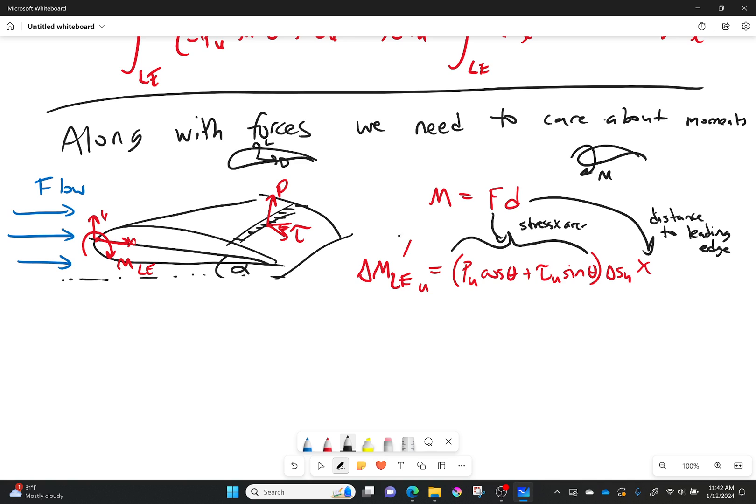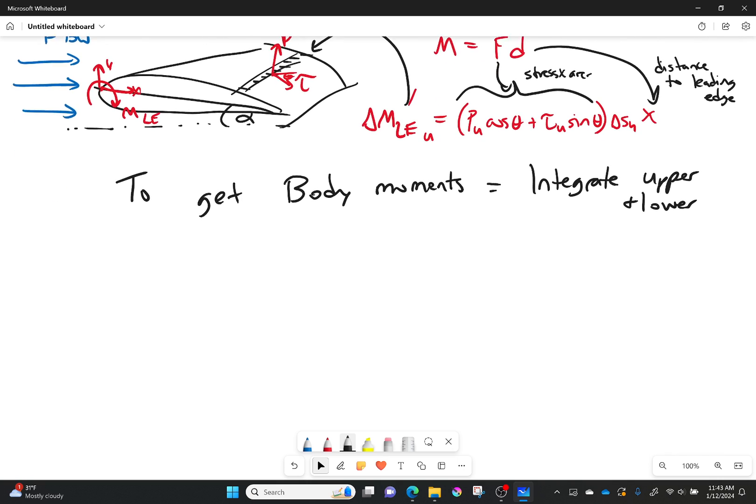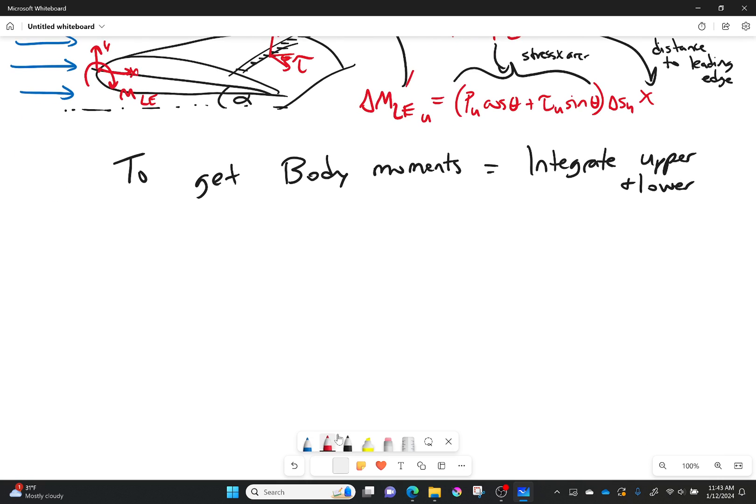So this was just for this particular spot on my upper surface. Remember we have an upper and a lower surface, and we have to integrate it. So to get our body moments, we're going to have to integrate the upper and lower surface. What does that lead to? It's going to lead to this equation.